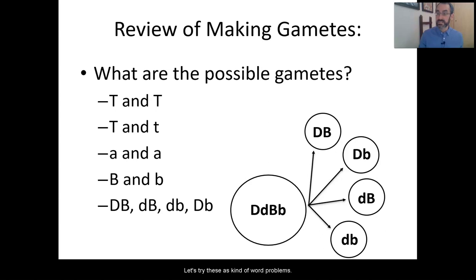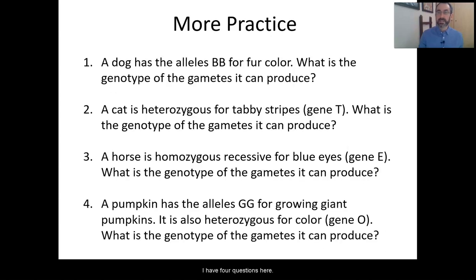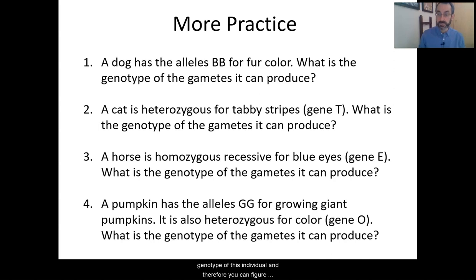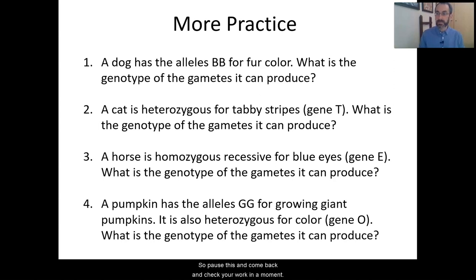Let's try these as word problems. I have four questions here. There's enough information in all of them to figure out the genotype of each individual, and therefore the possible gametes they can produce. Pause this and come back to check your work in a moment.